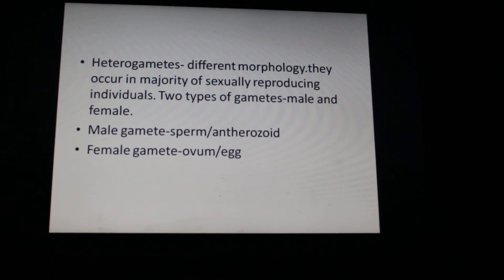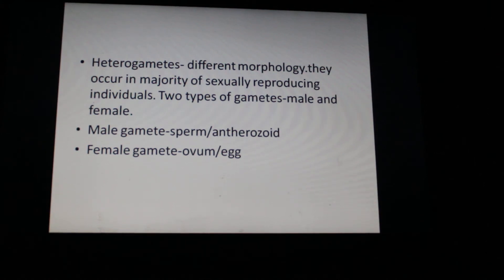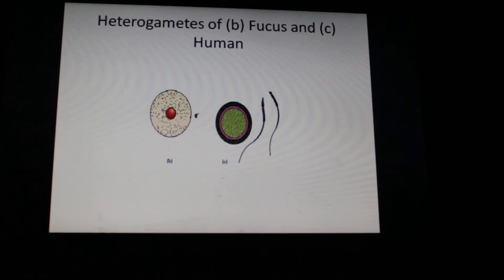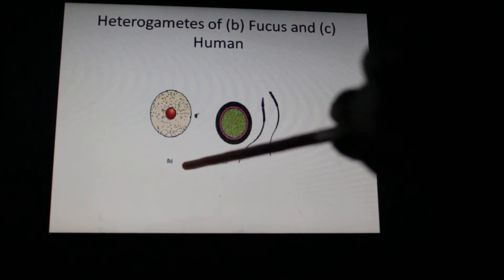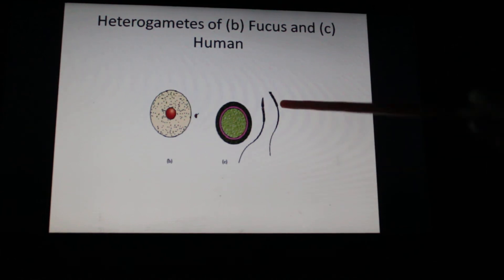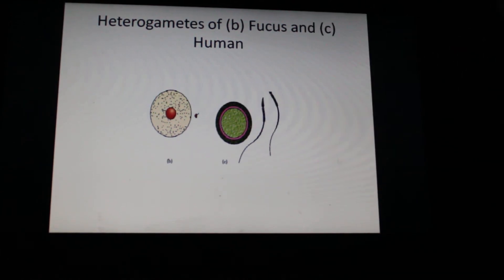The majority of sexually reproducing individuals form heterogametes — different types of gametes, one male and one female. The male gamete is generally called sperm or antherozoid (in case of plants). The female gamete is generally called ovum or egg. For example, in humans, this is the egg and these are the sperms — these are heterogametes.